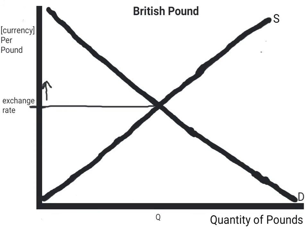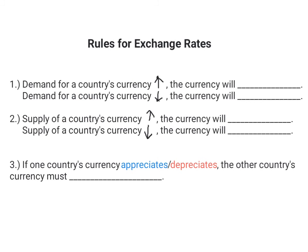When the exchange rate for a currency increases, that currency has appreciated. In contrast, when the exchange rate decreases, that currency has depreciated. There are three main guidelines that can help determine when a scenario would cause a currency to appreciate or depreciate. When the demand for a country's currency increases, the currency will appreciate. When the demand for a country's currency decreases, the currency will depreciate. When the supply of a country's currency decreases, the currency will appreciate. If one country's currency appreciates or depreciates, the other country's currency must do the opposite relative to it.